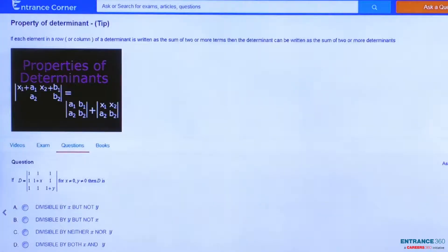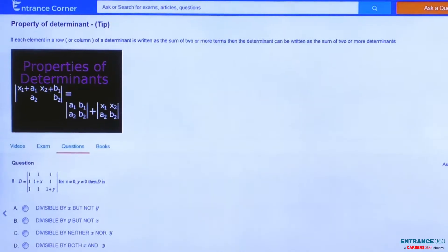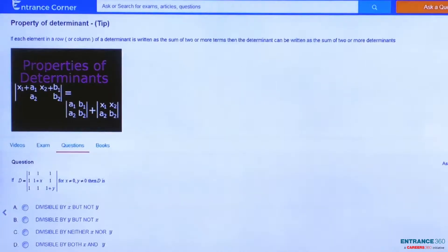Hello students, today we will solve a question from GATE 2007. The question gives us a determinant D where X and Y are not equal to 0, and we need to find which of the four options is correct.